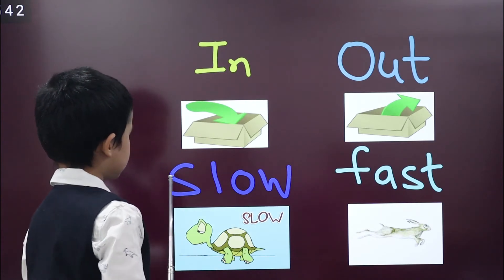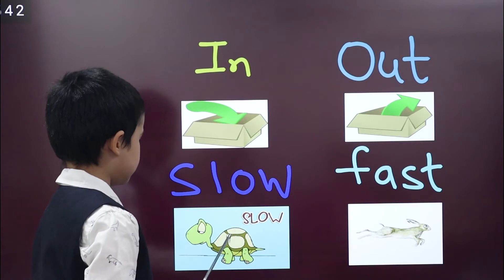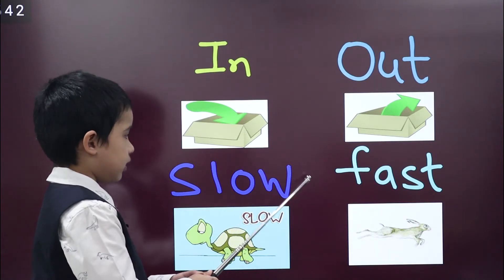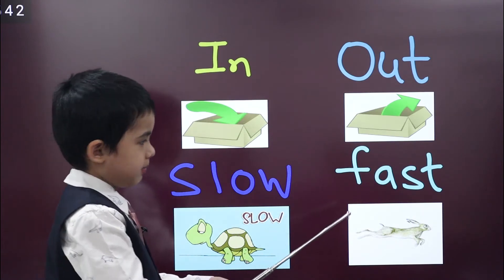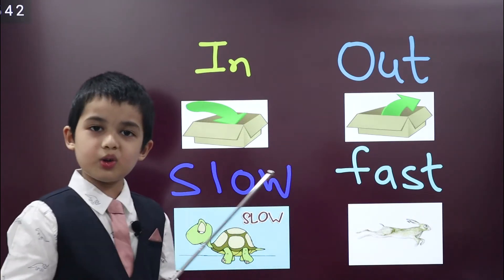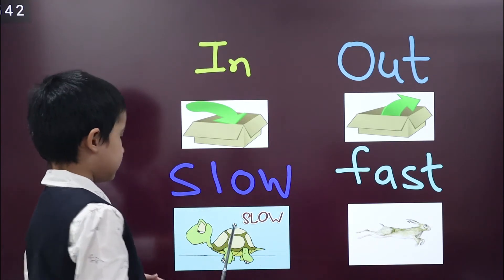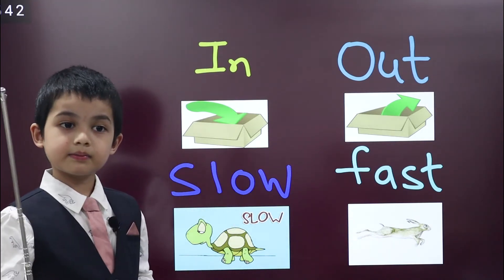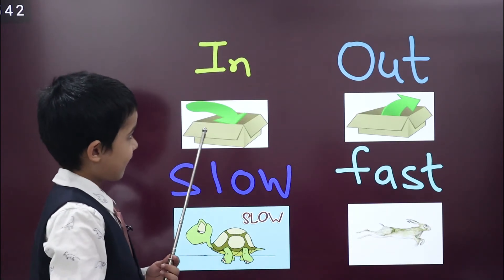Next word is slow. The tortoise is very slow at walking. Opposite of slow is fast. The rabbit is very fast. Have you heard rabbit and tortoise story? I will tell you one day.